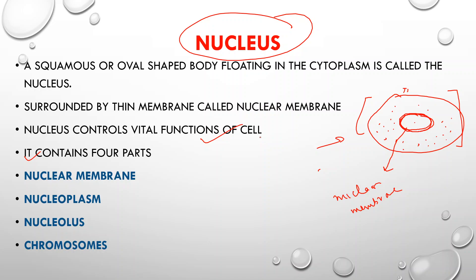The nuclear membrane surrounds the nucleus. It controls and allows the passage of certain materials in and out of the nucleus. Similar to how the cell membrane allows only limited substances to pass, the nuclear membrane also controls passage of certain materials inside and outside the nucleus.